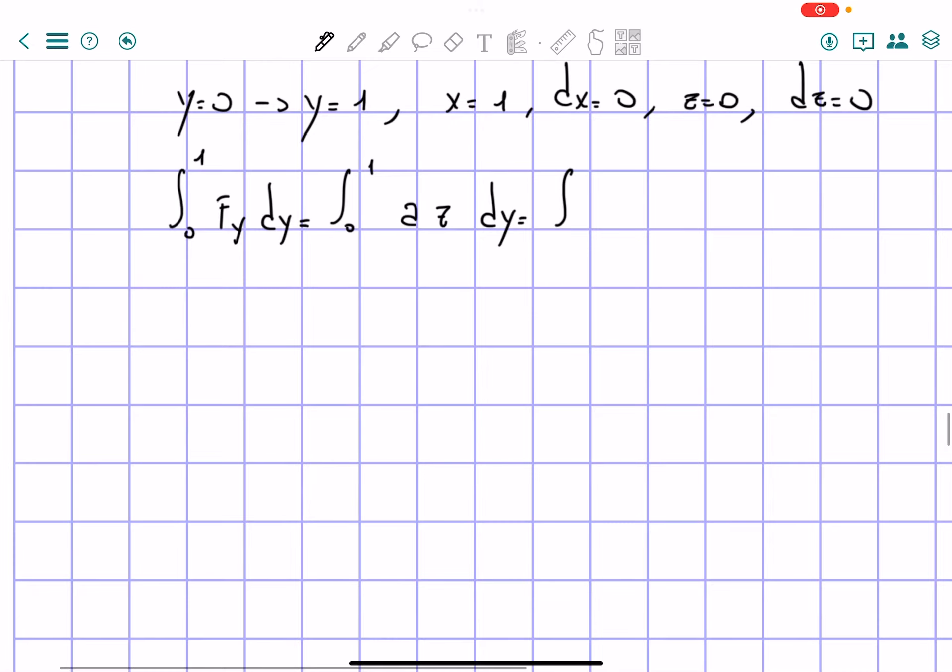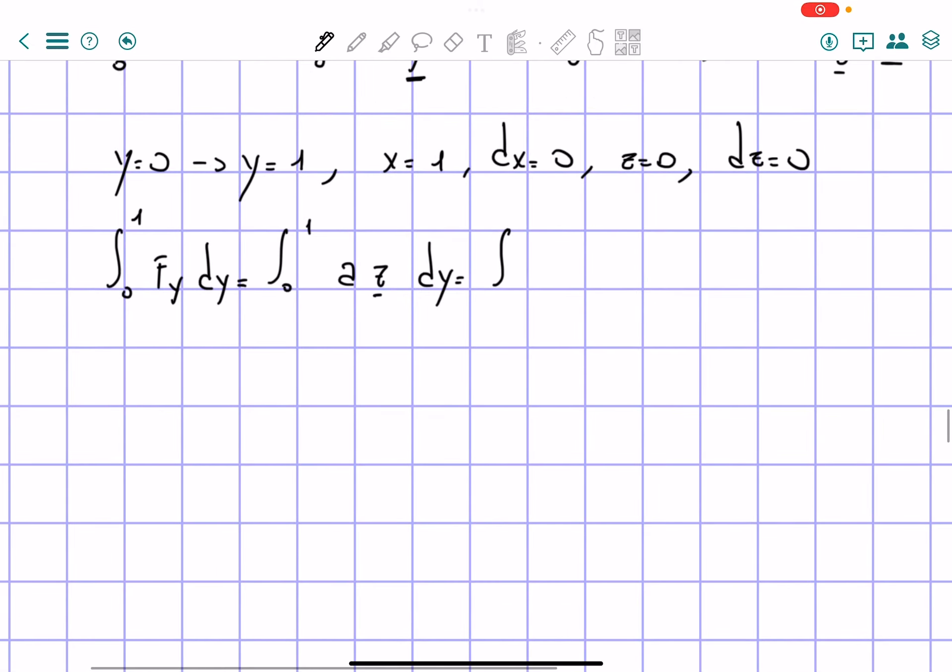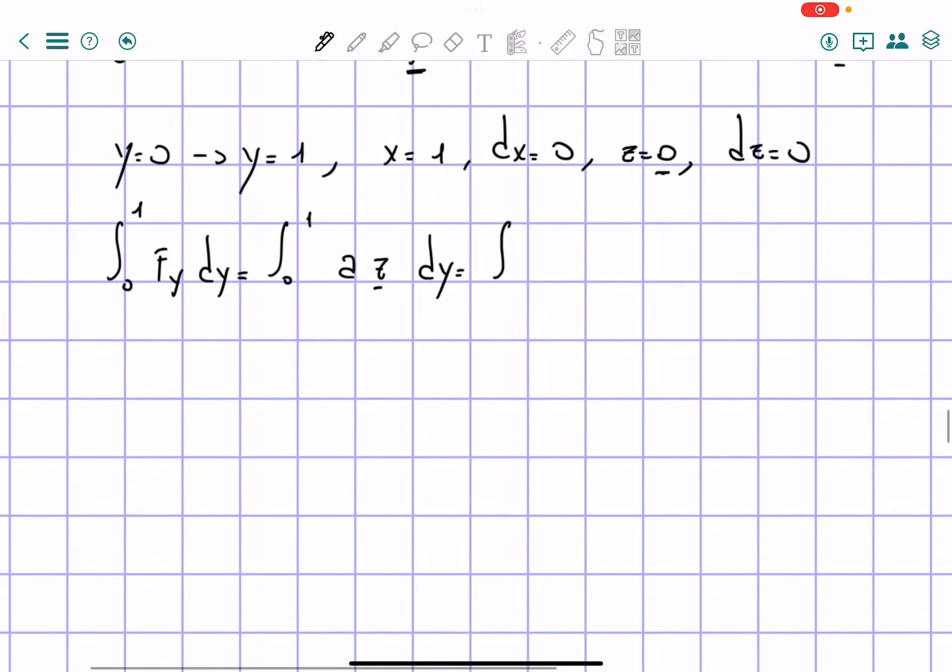So we're going to have, since z is equal to a constant, which is 0, we can substitute it in there. So we're going to have the integral from 0 to 1 of a times 0 dy,